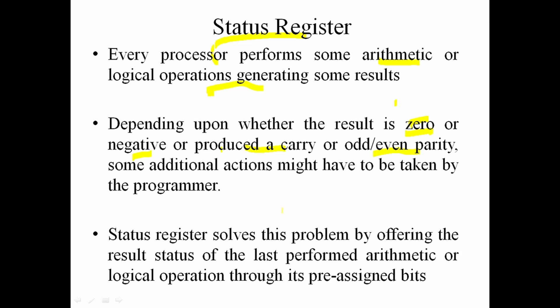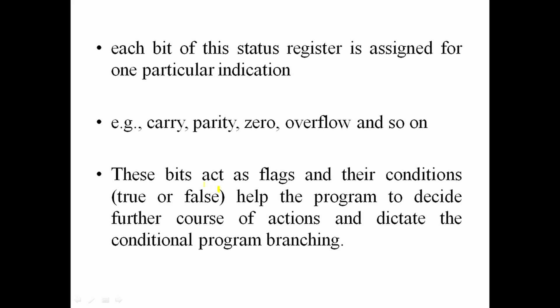This is the status register. The status register is updated after each operation performed by the processor. The status register holds individual flags — one bit each — for carry, parity, zero, overflow, and so on. These are called flags.